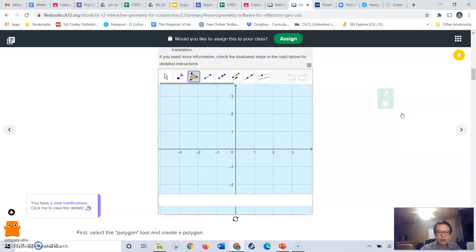So click on your polygon tool and then we're going to use your mouse to create a rectangle in quadrant one like this triangle ABC.